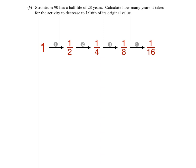We were told at the start of the question that Strontium-90 has a half-life of 28 years, so the time taken for the activity to decrease to 1/16th of its original value is 4 times 28, which is 112 years.